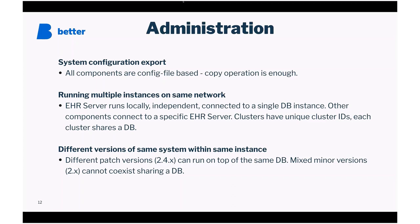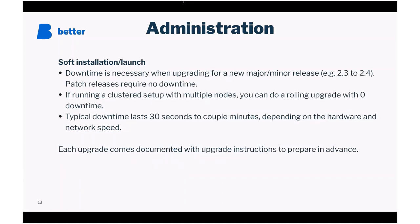Different versions of the same system within the same instance can run if the version difference is only in the patch part — for example, all 2.4.x versions can share a database since we guarantee no breaking changes. Mixed minor versions, such as 2.3.x and 2.4.x, cannot coexist sharing a database. We do a major or minor release once a year and support it for two years, giving ample time to upgrade. Downtime is necessary only when upgrading for new major or minor releases. Patch releases require no downtime in a multi-node setup — you can do a rolling upgrade with typical downtimes of 30 seconds to a couple of minutes depending on hardware.